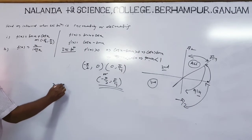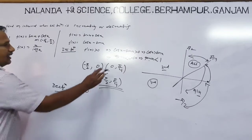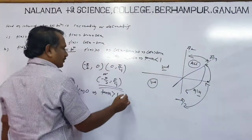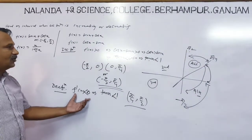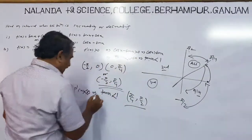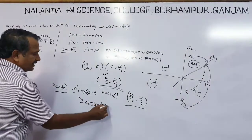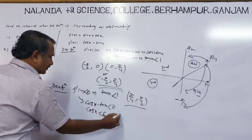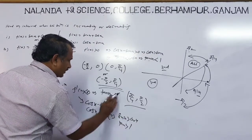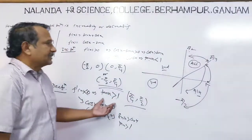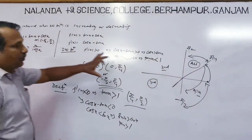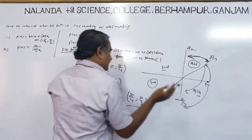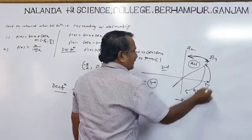For decreasing, f'(x) less than 0 means tan x greater than 1, so the interval is (π/4, π/2). So on the interval (-π/2, π/4), the function is increasing, and on (π/4, π/2), the function is decreasing.